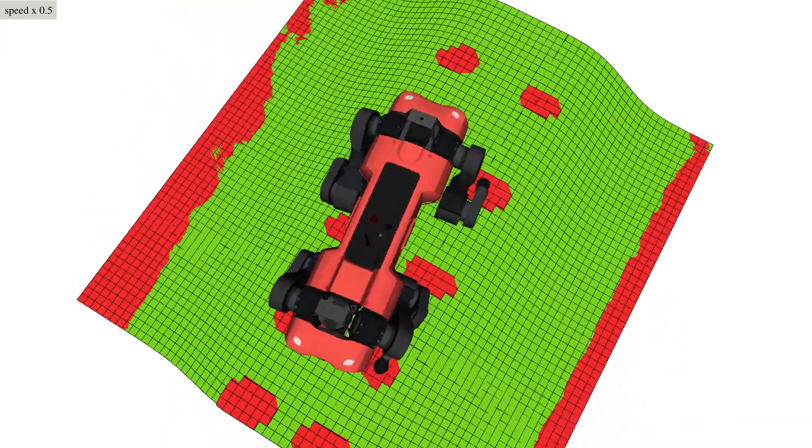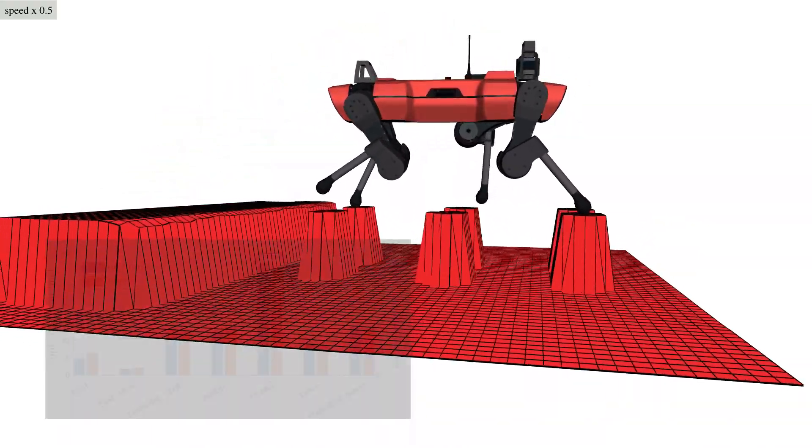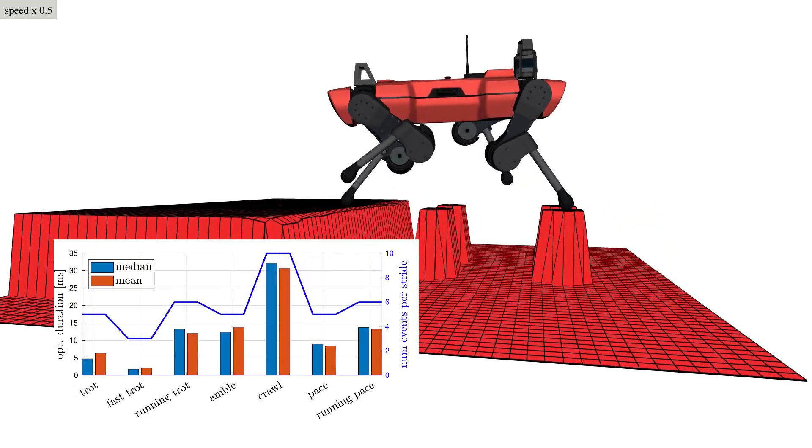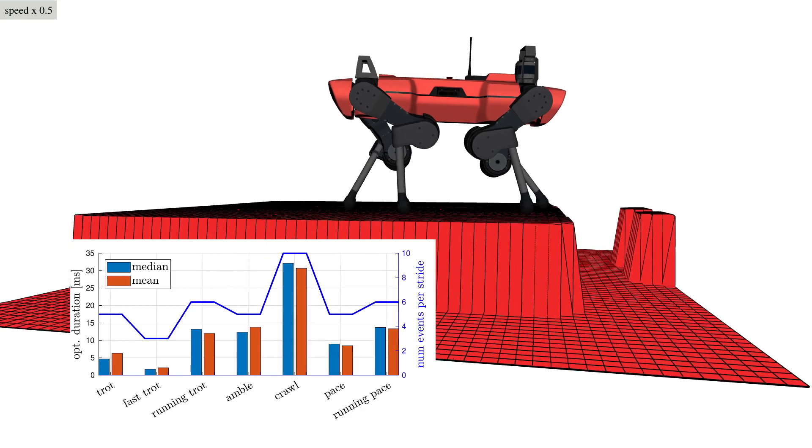Combining the compact dynamic model with graduated optimization, we achieve an average computation duration of only 6 milliseconds for a trot with a prediction horizon of one stride.